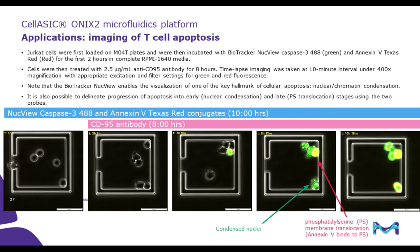Here's another example where we are examining T cell apoptosis at single cell level. We are using CD95 activation to induce programmed cell death and then visualizing the cellular events using a Caspase-3-specific apoptosis probe as well as Annexin-5. Let's take a look at the live cell movie.